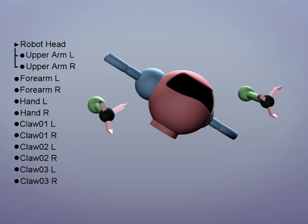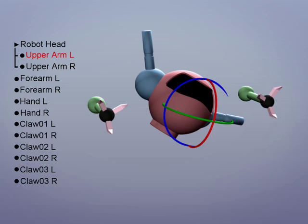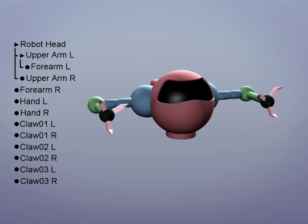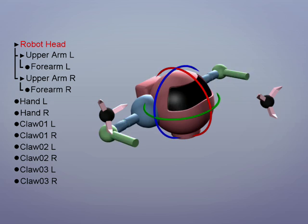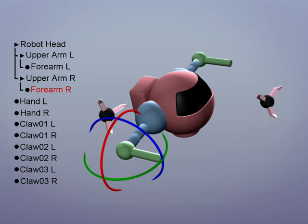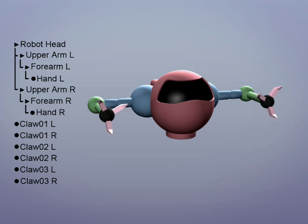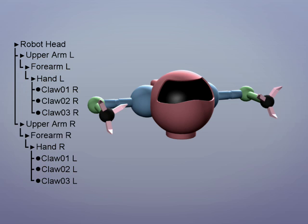We can also rotate the arms and they stay with the head. Here we're linking the forearms below the upper arms. Now the head will move both the upper arms and the forearms, and the upper arms will rotate the forearms. Next we can parent the spherical hands to the forearms and the claws to the hands.